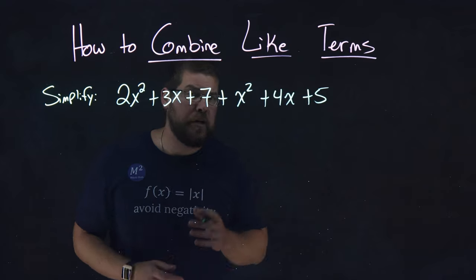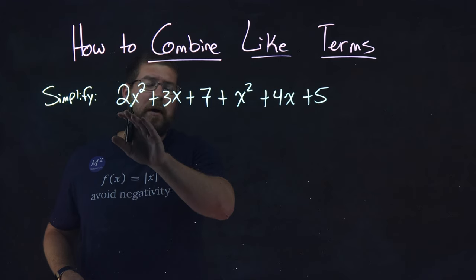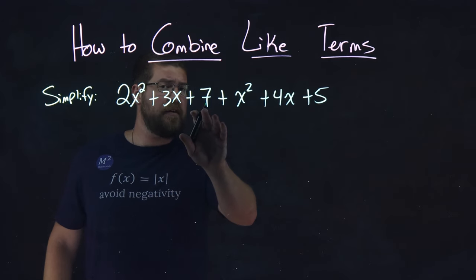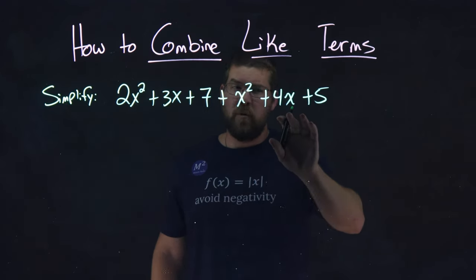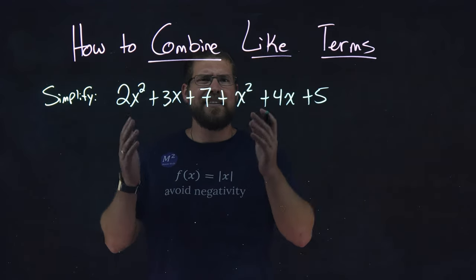Let's use an example to discover this. We have an operation to simplify 2x squared plus 3x plus 7 plus x squared plus 4x plus 5. We have to combine the like terms to simplify.